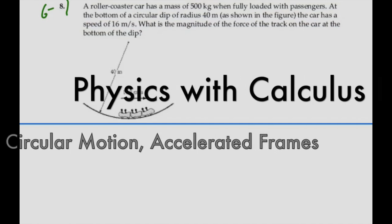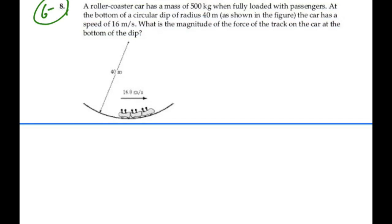Here's problem 6.8. A roller-coaster car has a mass of 500 kilograms when fully loaded with passengers. At the bottom of a circular dip of radius 40 meters, as shown in the figure, the car has a speed of 16 meters per second. What's the magnitude of the force of the track on the car at the bottom of the dip?